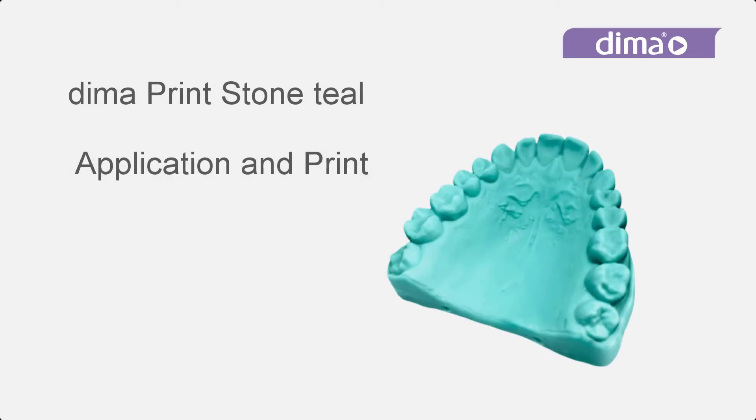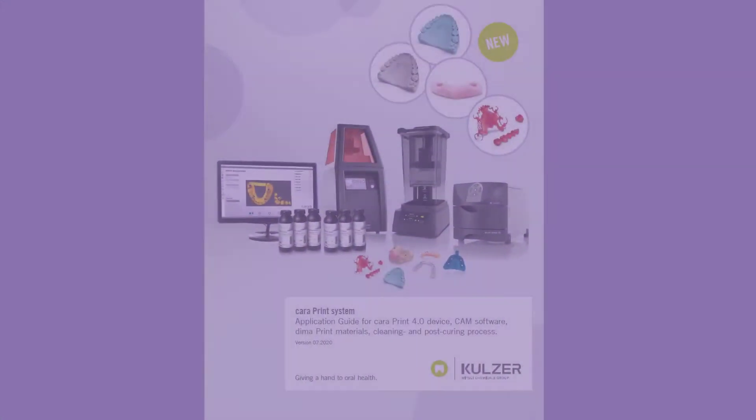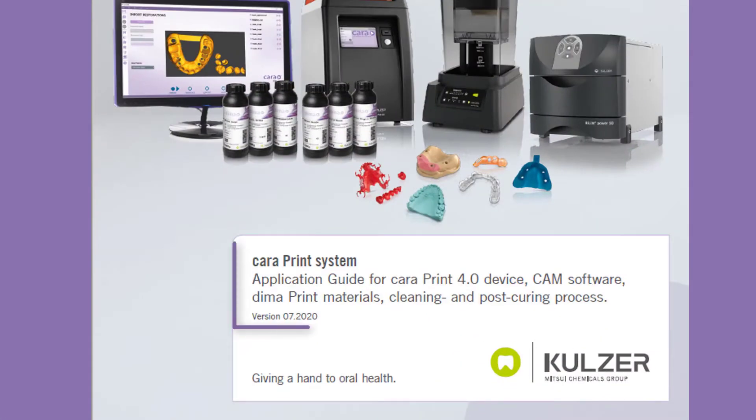This video shows the application of DEMA print stone teal for printing a model for a splint. During construction in your CAD software, please pay attention to the minimum thickness and the necessary diameters of the drain holes on the basal and lateral surface. You can find these for each DEMA print material in our application guide.